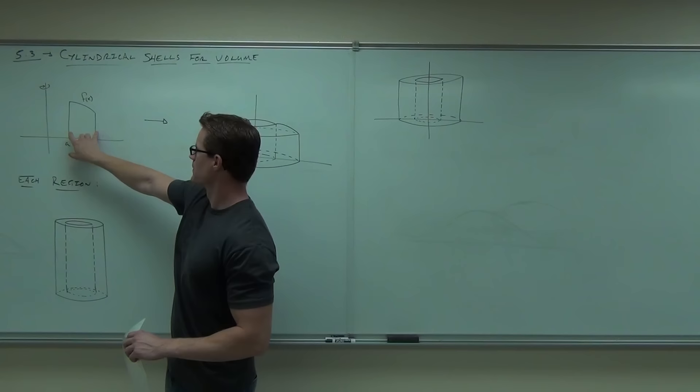Height is F of x sub k-dot. So we have: 2π times x sub k-dot (the average radius) times F(x sub k-dot) (the height) times Δx (the thickness). That's the formula for one individual shell at x sub k.